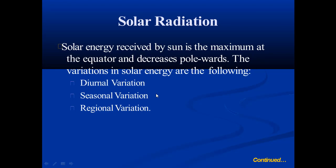The solar energy received is maximum at the equator and decreases towards the poles, because as we move from the equator towards the pole, the height and latitude increase, so the solar energy received decreases. As we move from the equator towards the poles, the variations in solar energy are of three types: diurnal variation, seasonal variation, and regional variation.